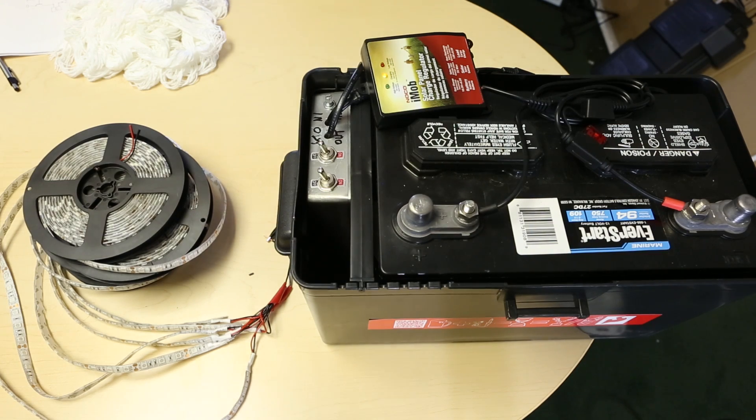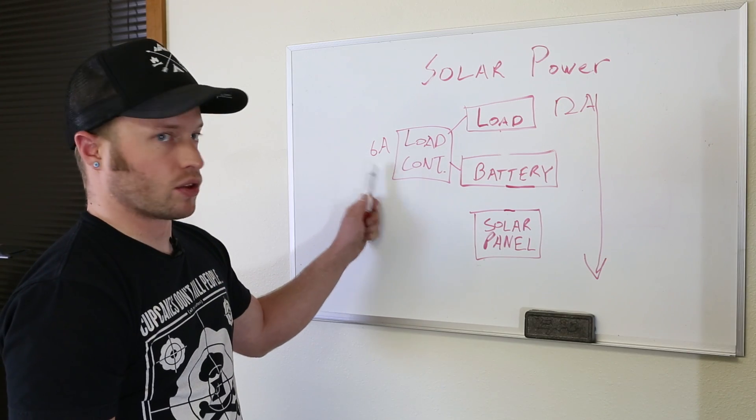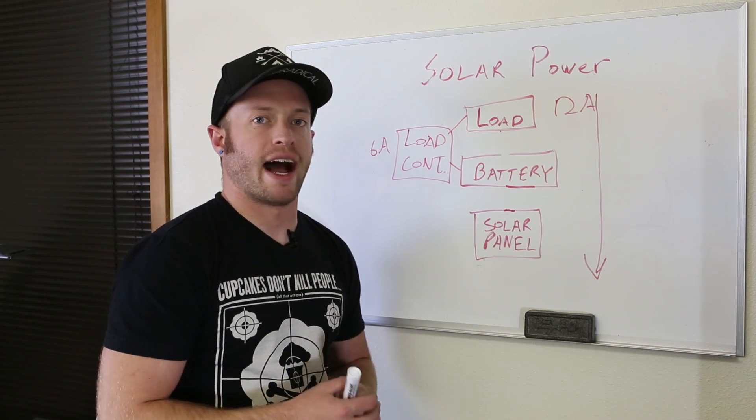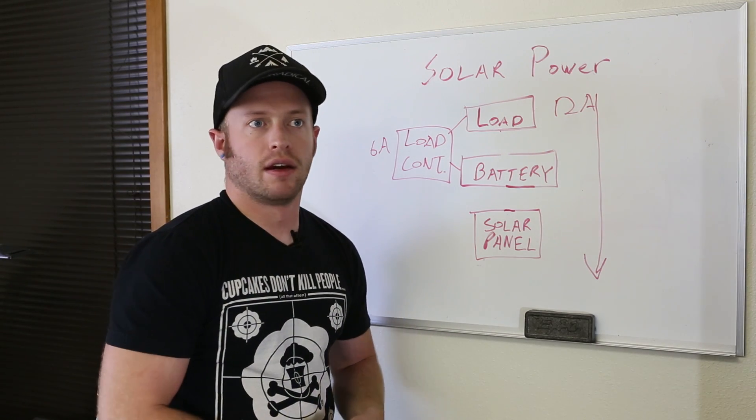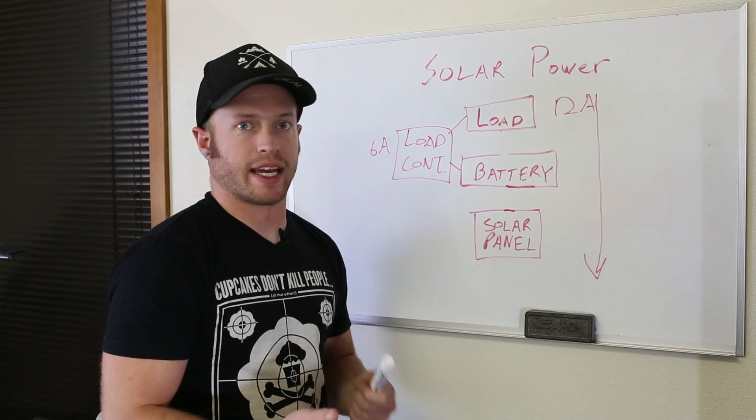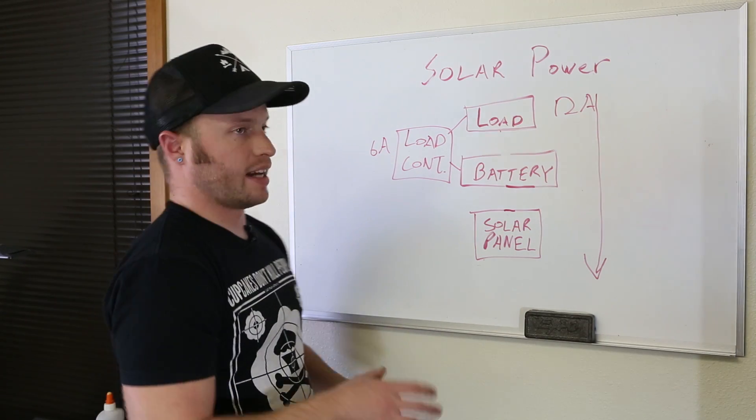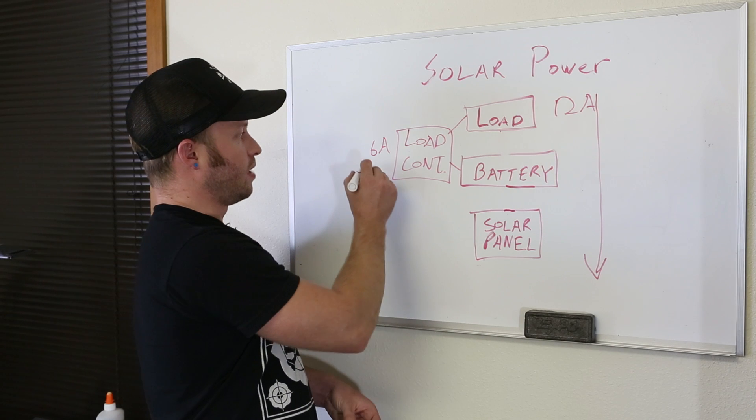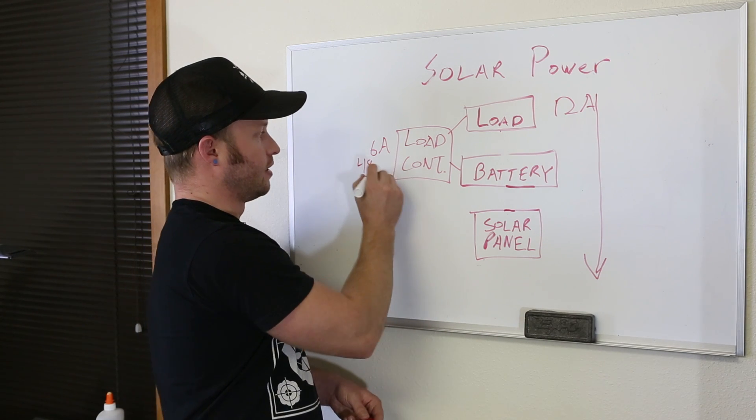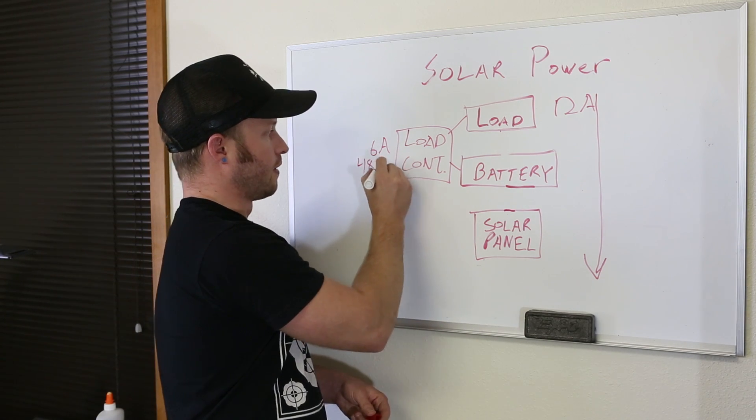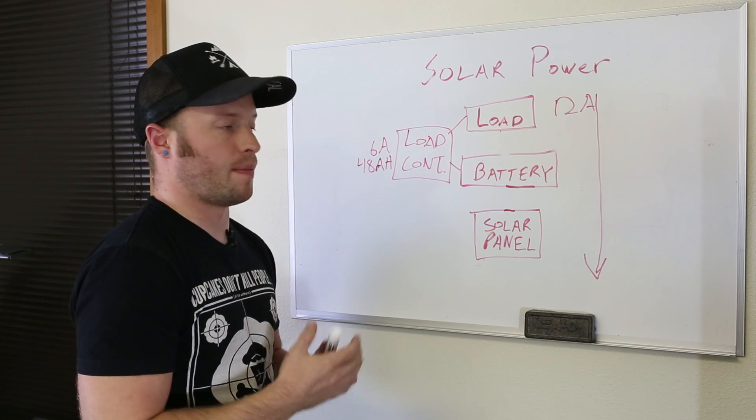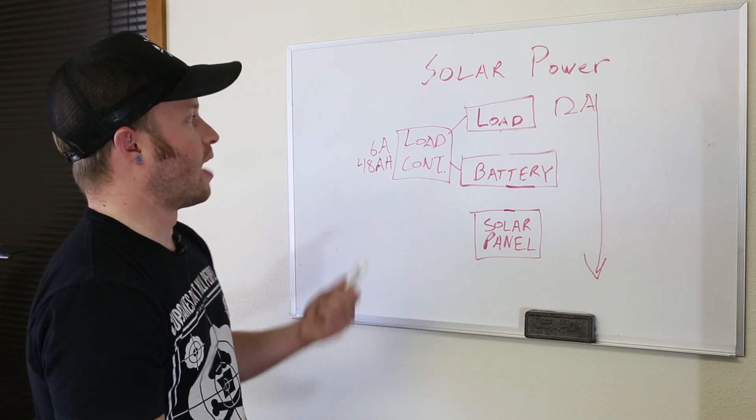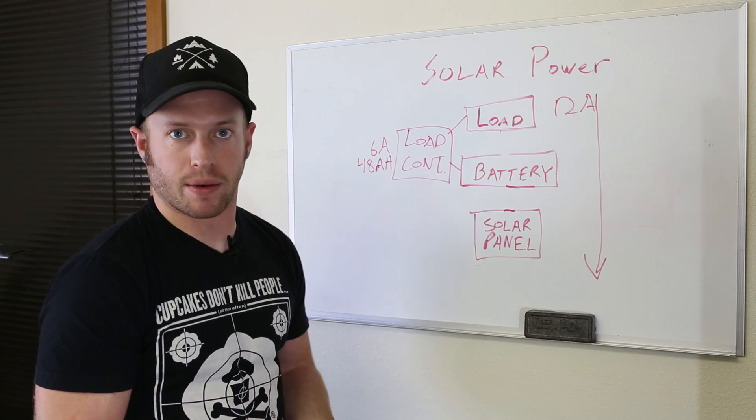And now I had to choose a battery. You take your load, in my case six amps, and multiply it by how long it will be running per day. In my case it's going to be running all night and I said that's about eight hours if I turn it on late. So that gives me about 48 amp hours. It essentially means a battery can deliver one amp for 48 hours or in my case six amps for eight hours.